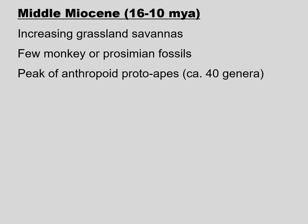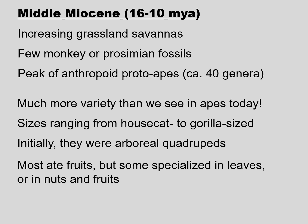During the Middle Miocene, 16 to 10 million years ago, we see increasing grassland savannas in Africa, and very few monkey or prosimian fossils, but lots of different types of anthropoid proto-apes — much more variety than we see in apes today. Apes ranging in size from housecat-sized up to gorilla-sized. Initially they appear to have been arboreal quadrupeds, and most ate fruits, but some specialized in leaves or in nuts and fruits. We tell this from their dentition.